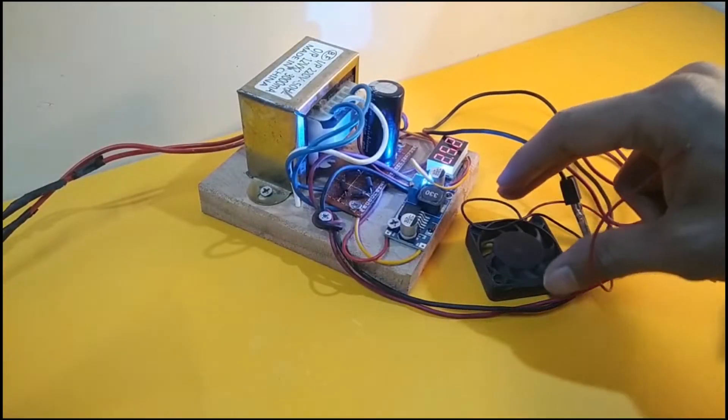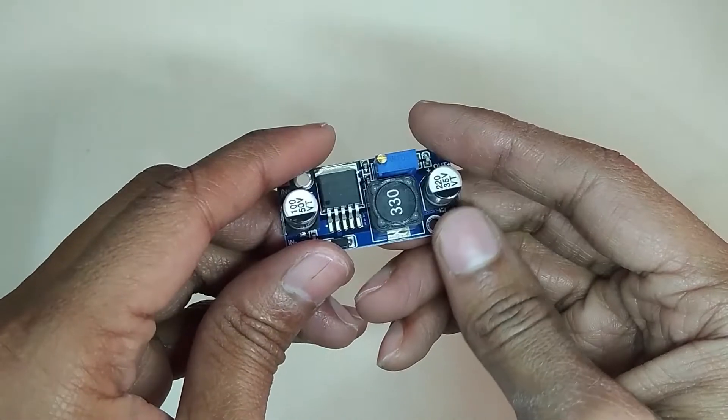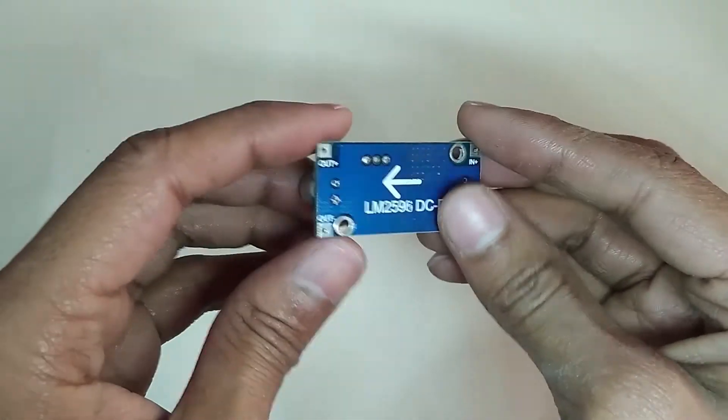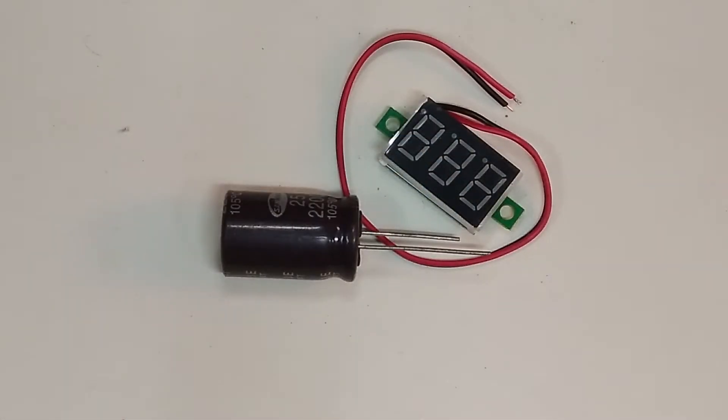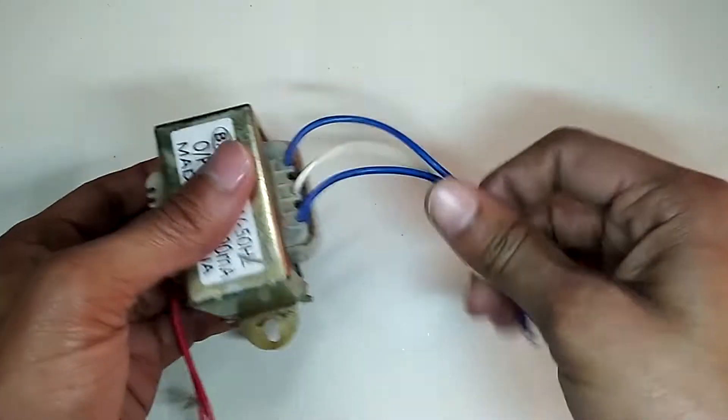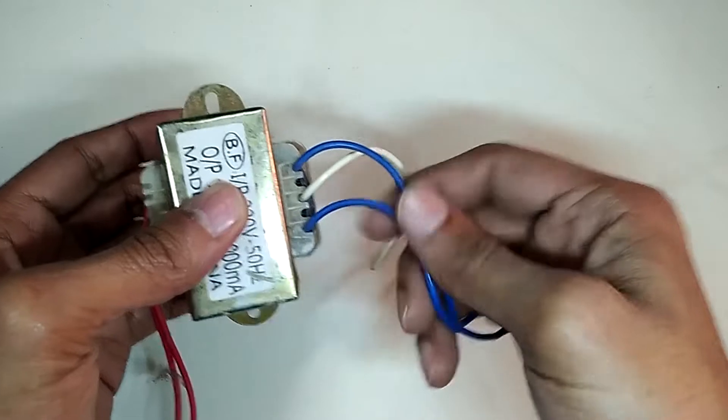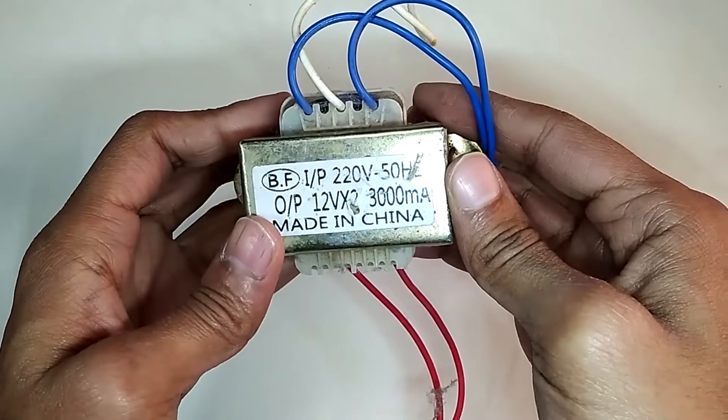For this we need a buck converter, this is LM2596 DC to DC buck converter, and need a display for showing the output voltage and also need a transformer. This is a 220 to 12 volt 3 ampere transformer, but this transformer can produce 24 volt.